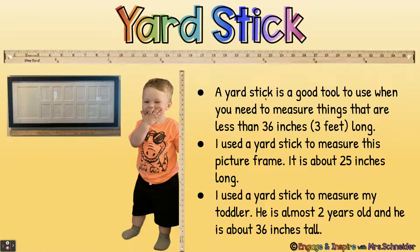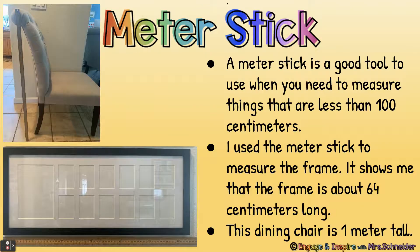A yardstick is a good tool to use when you need to measure things that are less than 36 inches, which is the same as three feet long. I used a yardstick to measure this picture frame — it is about 25 inches long. I used a yardstick to measure my toddler; he is almost two years old and he is about 36 inches tall — about the same size as the yardstick. A meterstick is a good tool to use when you need to measure things that are less than 100 centimeters. I used the meterstick to measure the frame and it shows me the frame is about 64 centimeters long. This dining chair is one meter tall.